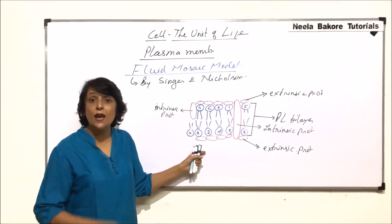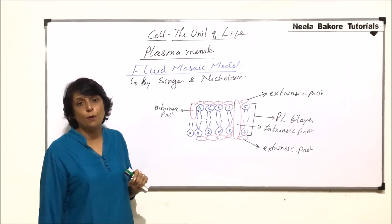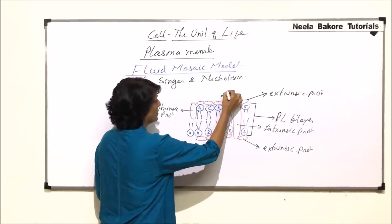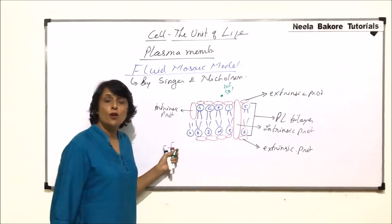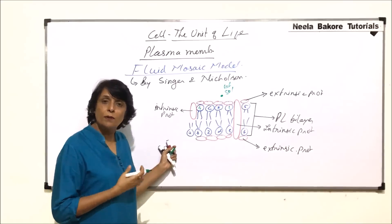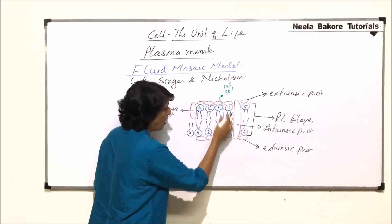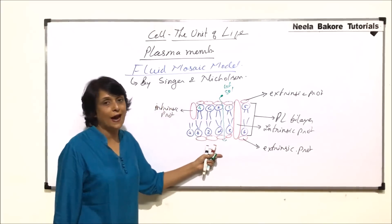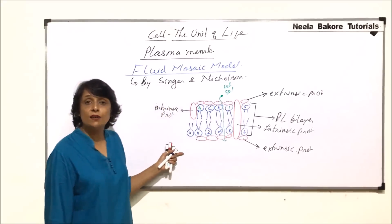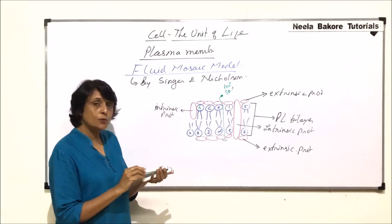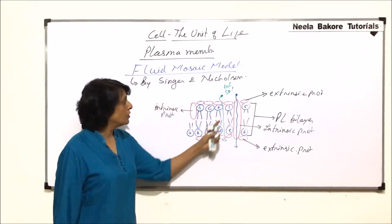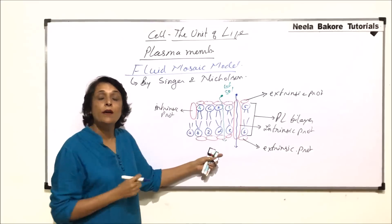Now on the basis of this we will check whether this model explains all three properties or not. The first property was entry of fat soluble substance. Fat soluble substance was going through all membranes, whether it was Danielli and Davson's model or Robertson's model. Here also there is no obstruction for the entry of fat soluble substances. The problem was water soluble because this layer was acting as a barrier. But can now this protein help in the movement of water soluble substances?